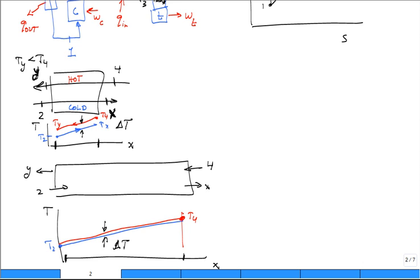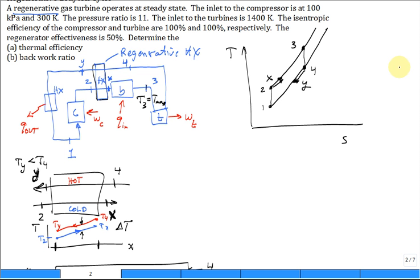So what you do is this could go as high as T4, this could go as low as T2, an ideal situation, that's right.